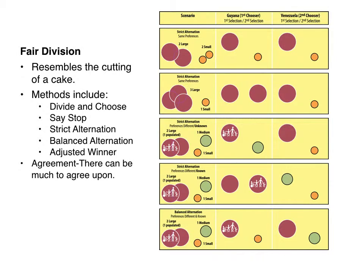Regarding agreement, there can be much to agree upon. You can have an agreed-upon award, but the key question in this section is how you're going to divide up that award — the bargaining rent, as it were.